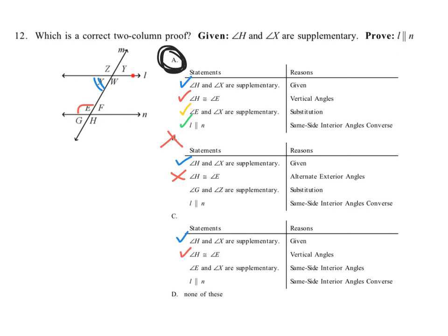Do we know the lines are parallel? No — that's what we're trying to prove. If we don't know the lines are parallel, we can't say angle E and angle X are supplementary just because they're same-side interior angles. That doesn't make them supplementary until we know the lines are parallel, and we don't yet. So C is not the answer. And since A works, it's not D (none of these) either. The answer is A.